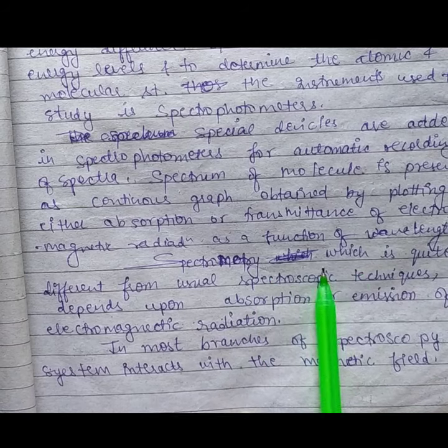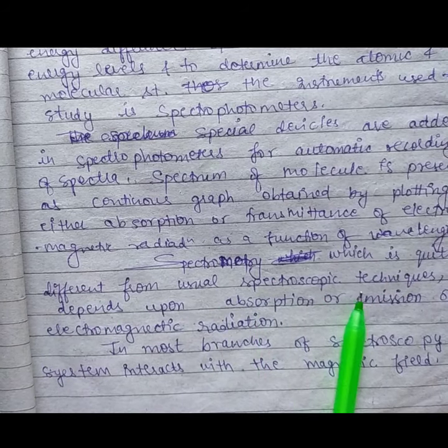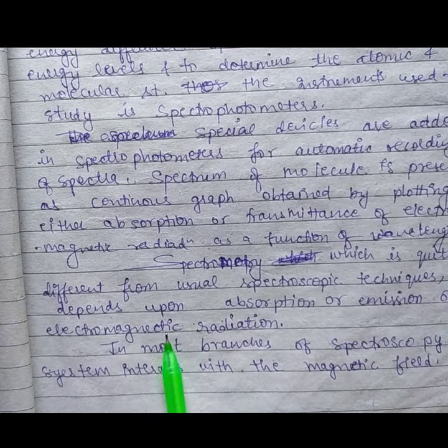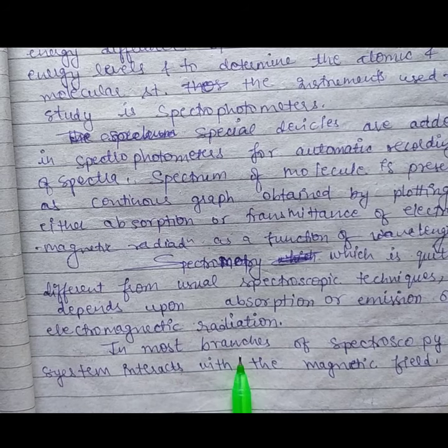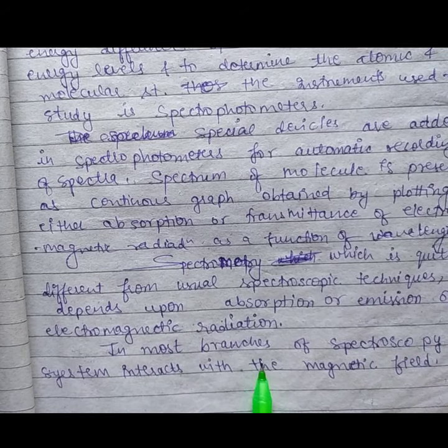Spectrometry, which is quite different from usual spectroscopic techniques, depends on absorption or emission of electromagnetic radiation. In most branches of spectroscopy, the system interacts with the magnetic field.